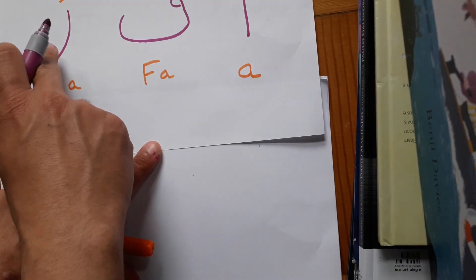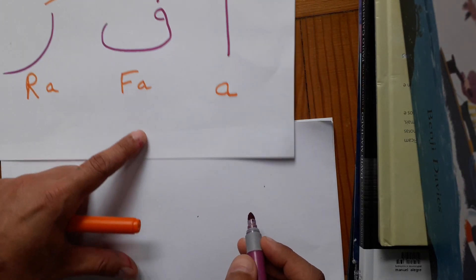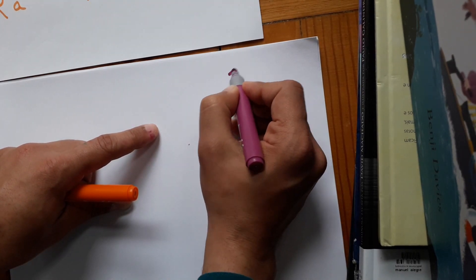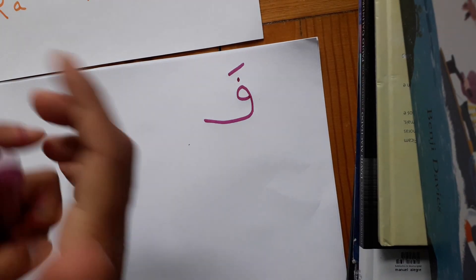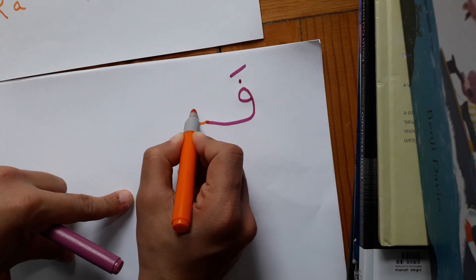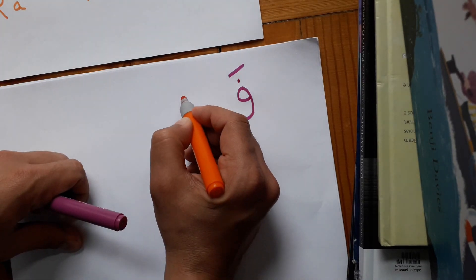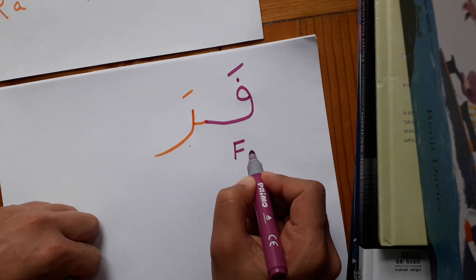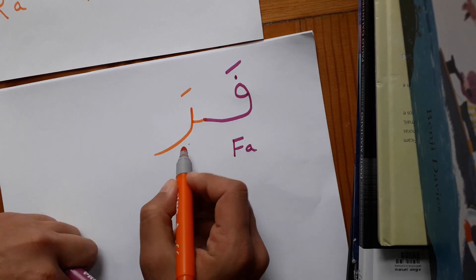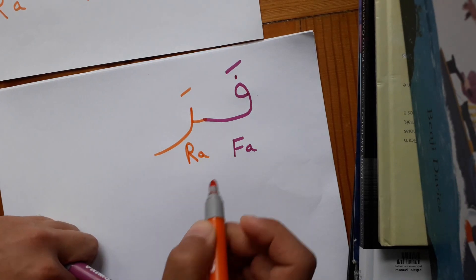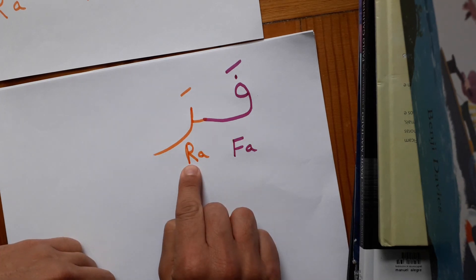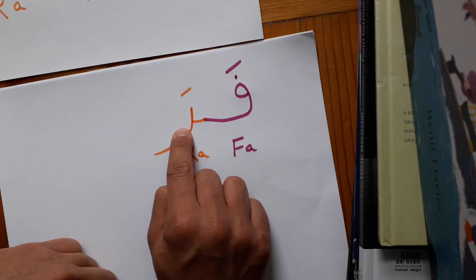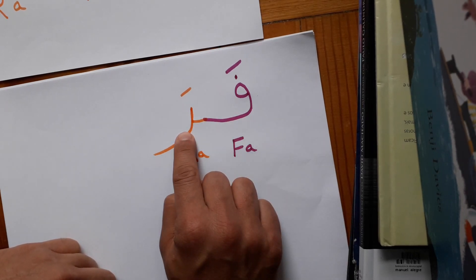So 'fa' and 'ra', so it would be like this. This is 'fa', and let's connect 'ra'. So it is again 'fa', 'ra'. Fara, fara, fara. It means escaped. Fara, it means escaped.